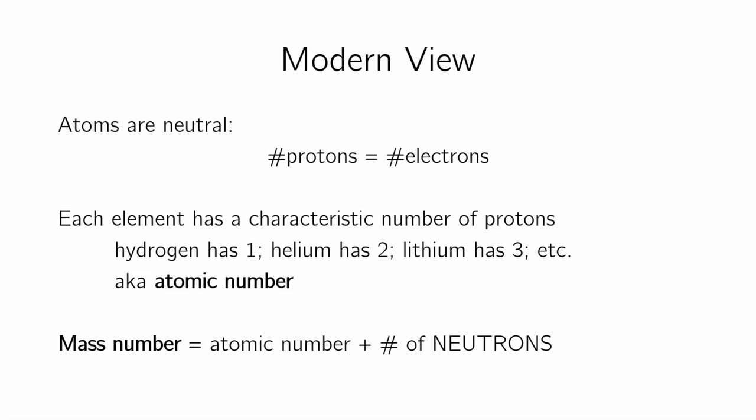Each element has a characteristic number of protons. Hydrogen is 1, helium is 2, lithium is 3, and that's known as the atomic number. And if you look at the periodic table, the numbers go up in increasing atomic number. Every subsequent element has an extra proton.